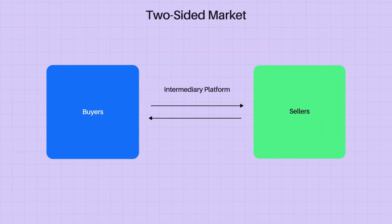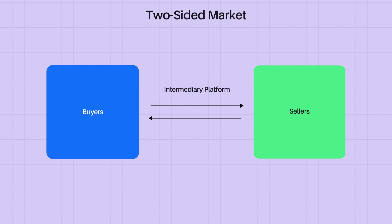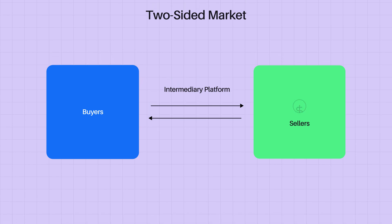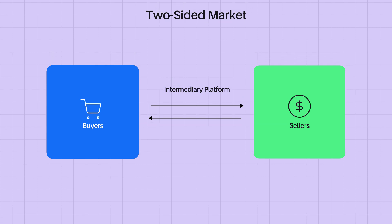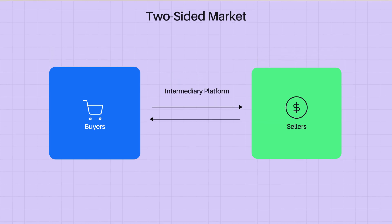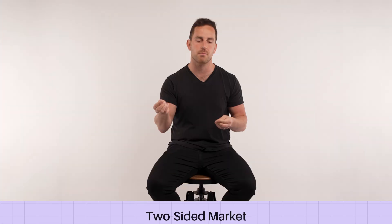Typically in Web2, you have mostly two-sided marketplaces, where you have a producer and seller of a good software product, and then you have the user that buys and utilizes that same product.